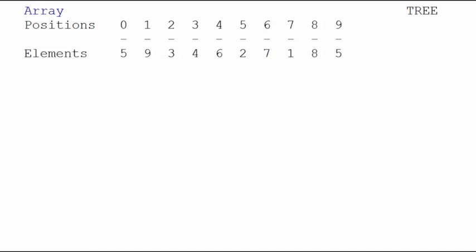So if we're going to store this particular array into a tree, we're going to take this first element, five, which is in position zero of the array, and we're going to put it in the root of the tree. And this is position zero of the tree.